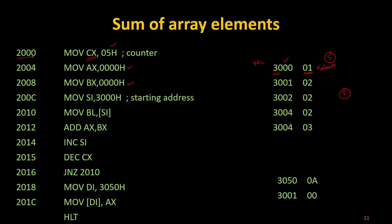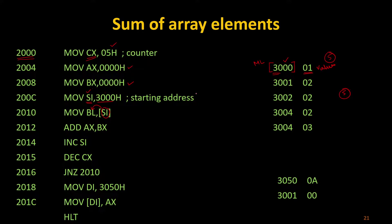This is the starting point of your program memory address, which keeps on incrementing depending upon the size of your instruction. Here I have to move SI, which is going to be my source index, pointing to 3000. So 3000 is here. If I am going to use the square bracket, a specific location will be taken, and after that I can keep updating. So I will move SI with the value 3000, and then move the values inside SI to BL.